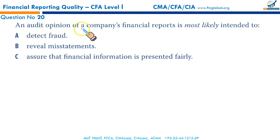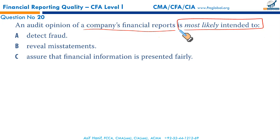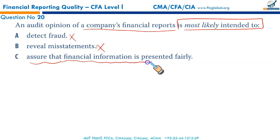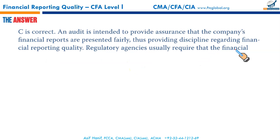An audit opinion on a company's financial report is most likely intended to do what? It is not to detect fraud — remember, audit is not for the detection of fraud. It is not to reveal misstatements. It is to assure — that's why it's called audit and assurance. It is an assurance that the financial statement is presented fairly. C is the right answer.